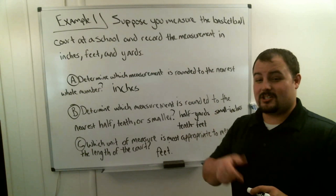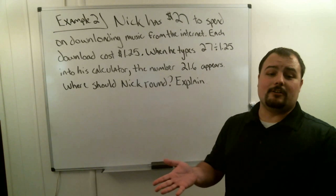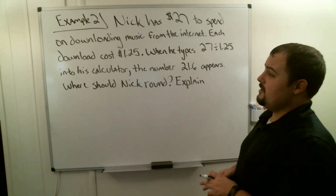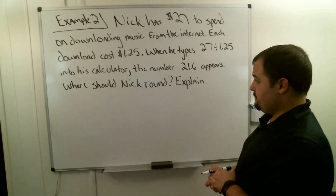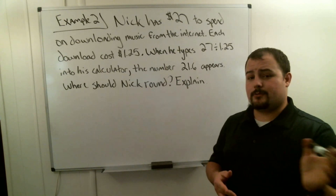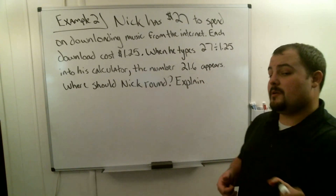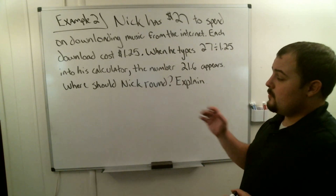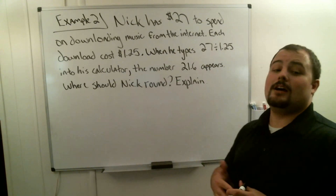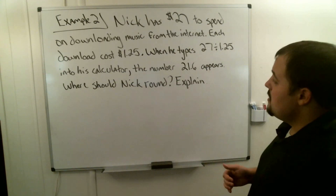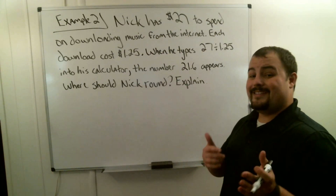In example two, we're looking at a problem about downloading music. Nick has $27 to spend on downloading music from the internet, and each download costs $1.25. When he types 27 divided by 1.25 into his calculator, he gets 21.6. The question is: where should Nick round, and explain how you know whether he should round 21.6 up or down in this situation?